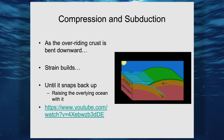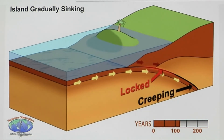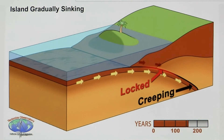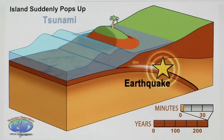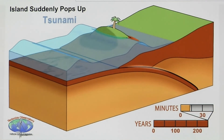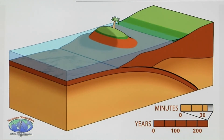Looking at the animation: we can see the oceanic crust coming in, the continental crust being bent down, and at some point it snaps back up. There's the crest of the wave — that's the tsunami going in both directions. Part of it then crashes onto the coast.